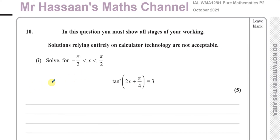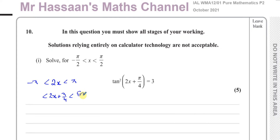So I'm going to transform the limits. I multiply each part by 2, giving π and −π. Then I add π/4 to each part, because the argument is 2x + π/4. So the upper limit becomes π + π/4, which is 5π/4, and the lower limit becomes −π + π/4, which is −3π/4. I need to collect all solutions between these two limits to ensure I don't lose any.